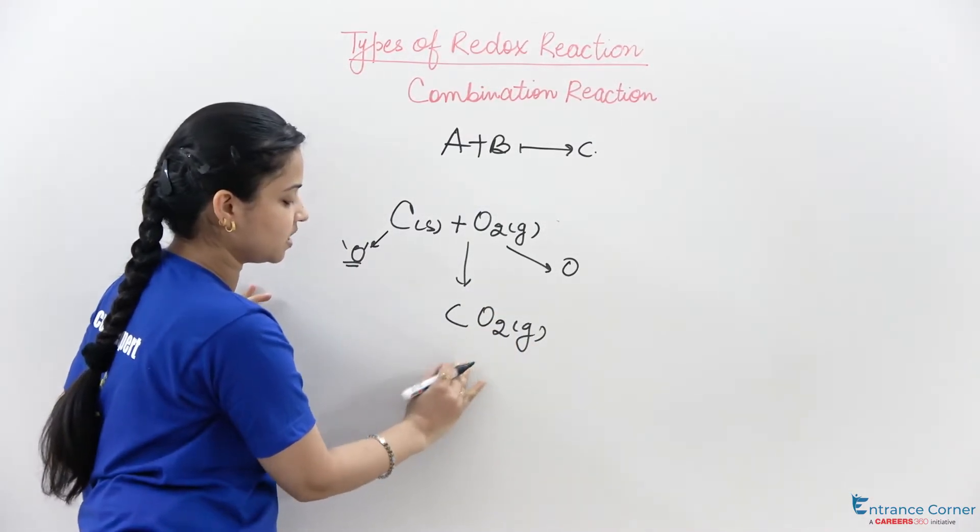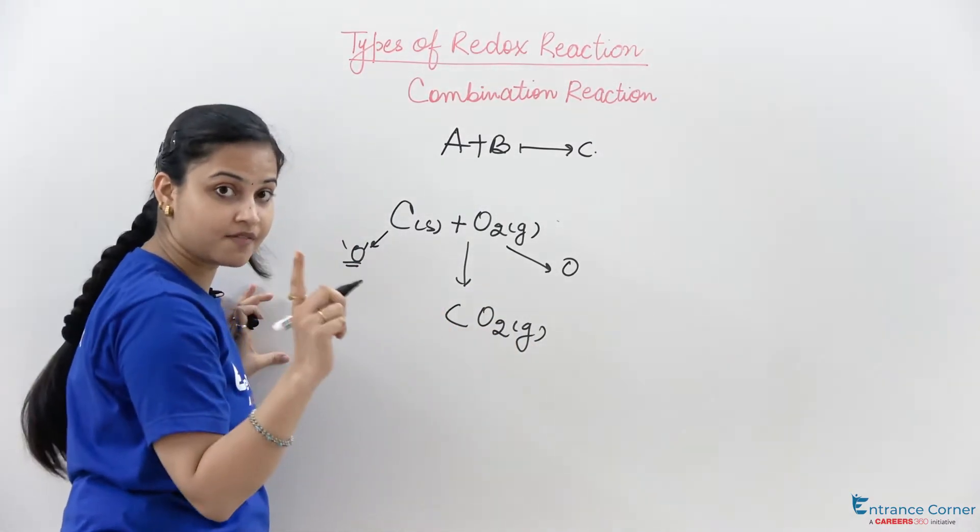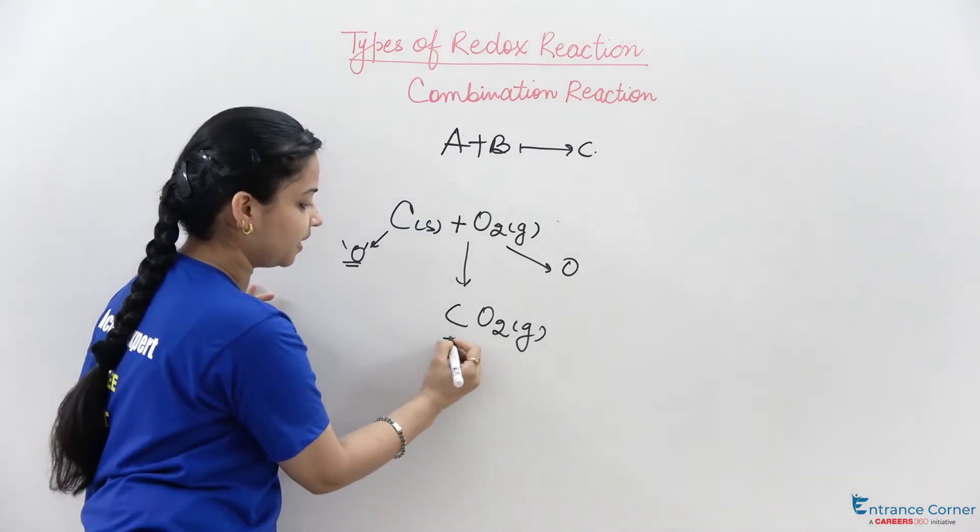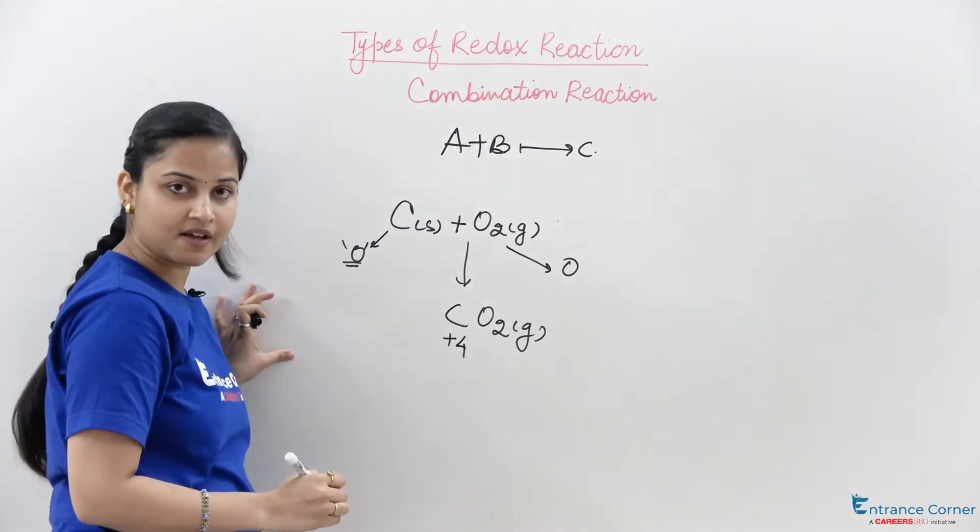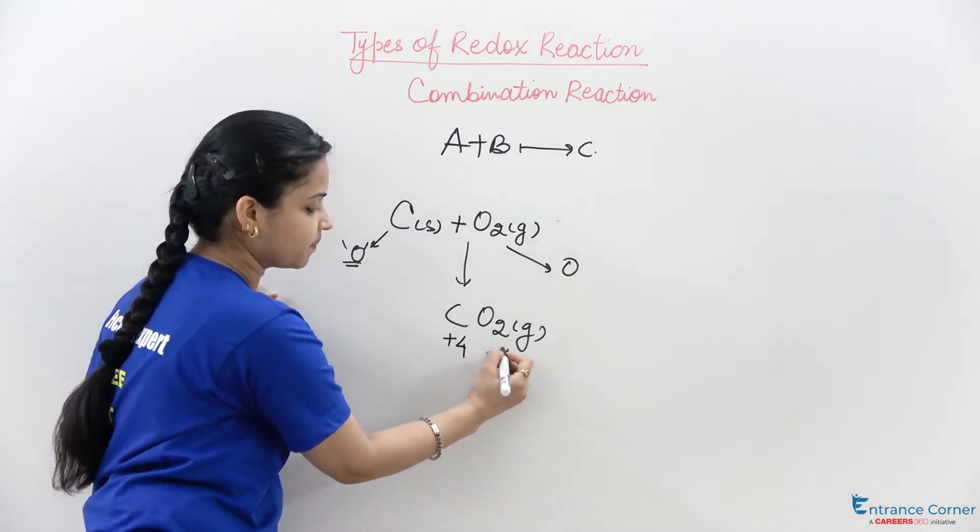Now over here, carbon in CO2 will have the oxidation number of plus four and oxygen will have the oxidation number of minus two.